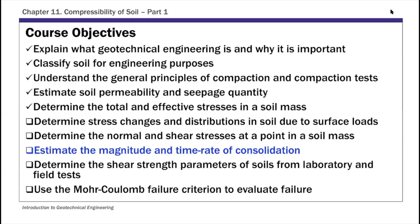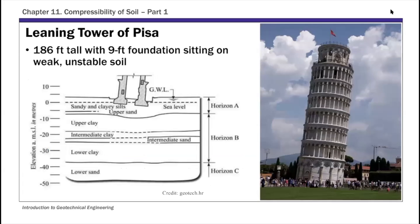To start this compressibility and consolidation discussion, I want to use this example here. This is perhaps one of the most famous examples of settlement — the Leaning Tower of Pisa. This tower is over 180 feet tall, with a nine-foot foundation sitting on weak, unstable soil. The construction of this leaning tower took almost 200 years due to problems associated with settlements and tilting.